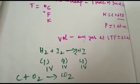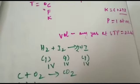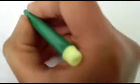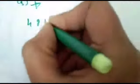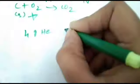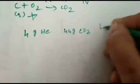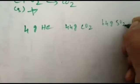Next, calculate the volume occupied by the law of constant volume. Example: 4 grams of helium, 44 grams of carbon dioxide, 64 grams of sulfur dioxide at STP.